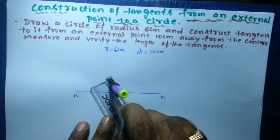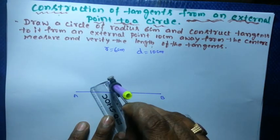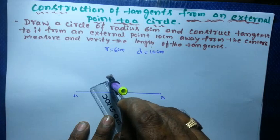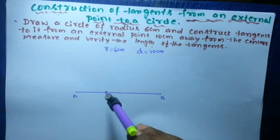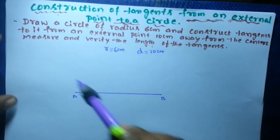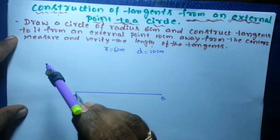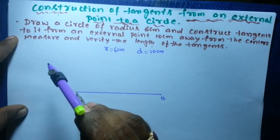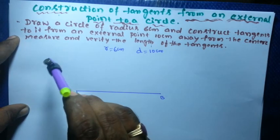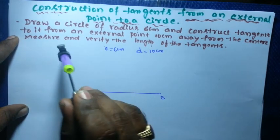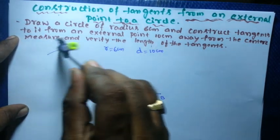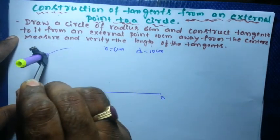They have given a radius of 6 centimeters, so take 6 centimeters in a compass. Then take A as the center and draw a circle of radius 6 centimeters.